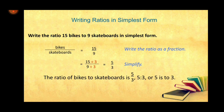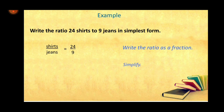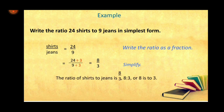Another example: write the ratio of 24 shirts to 9 jeans in simplest form. Shirts over jeans written as a fraction is 24 over 9. We simplify by thinking of a number divisible by 24 and 9, which is 3. So 24 divided by 3 and 9 divided by 3 equals 8 over 3. The ratio of shirts to jeans is 8 over 3, 8 colon 3, or 8 is to 3.